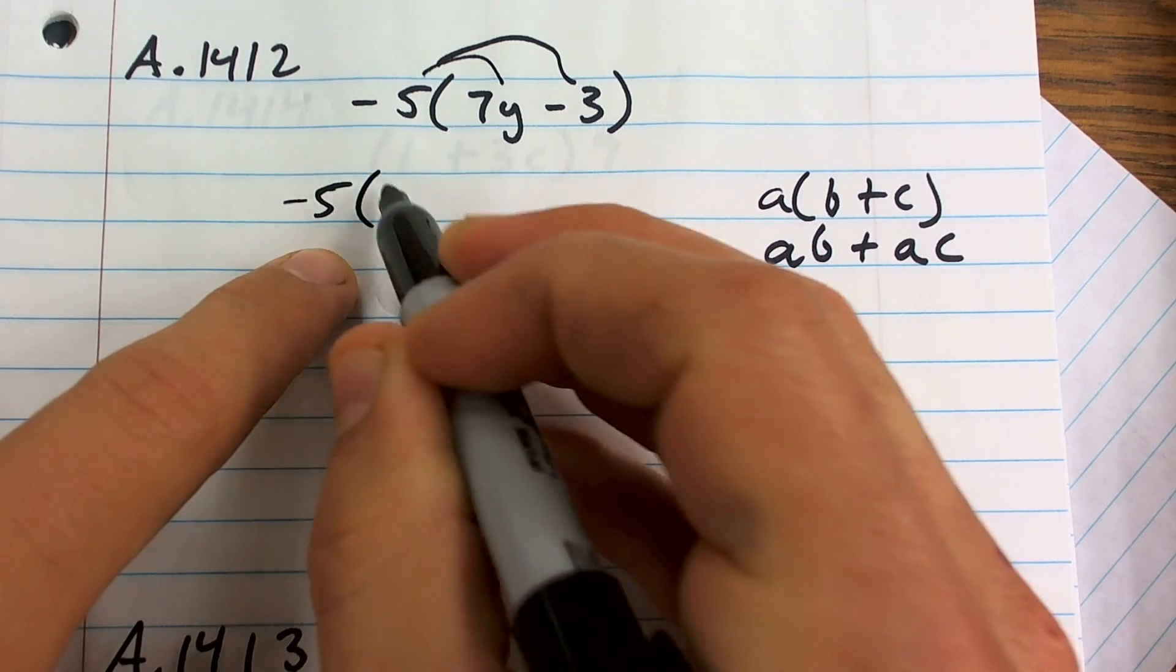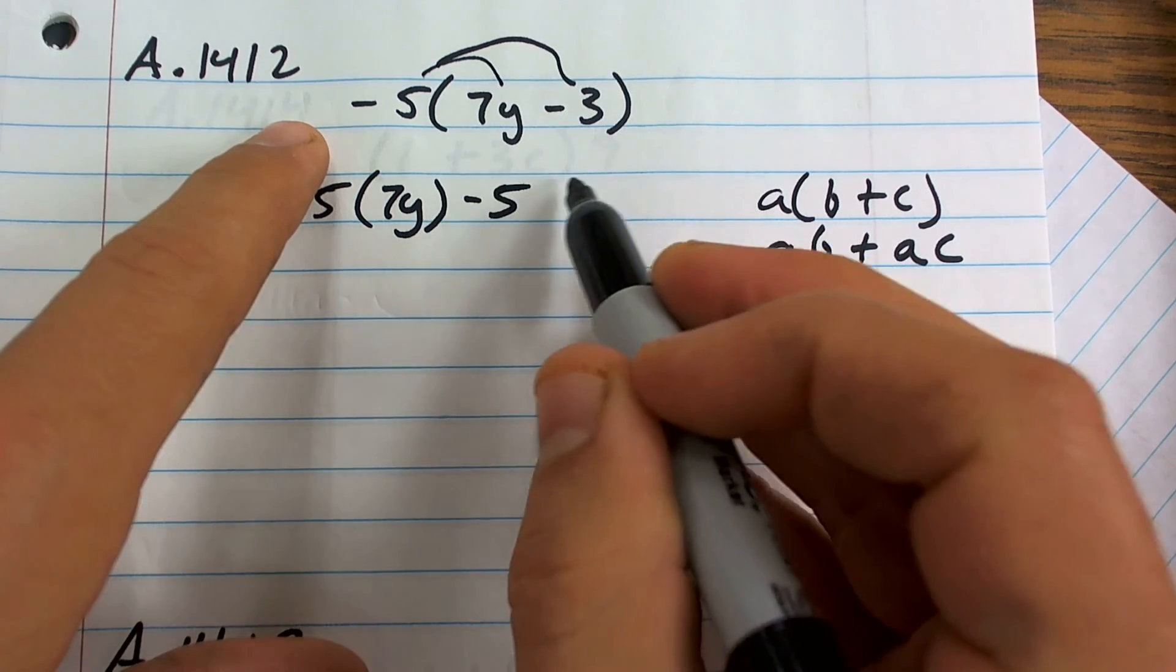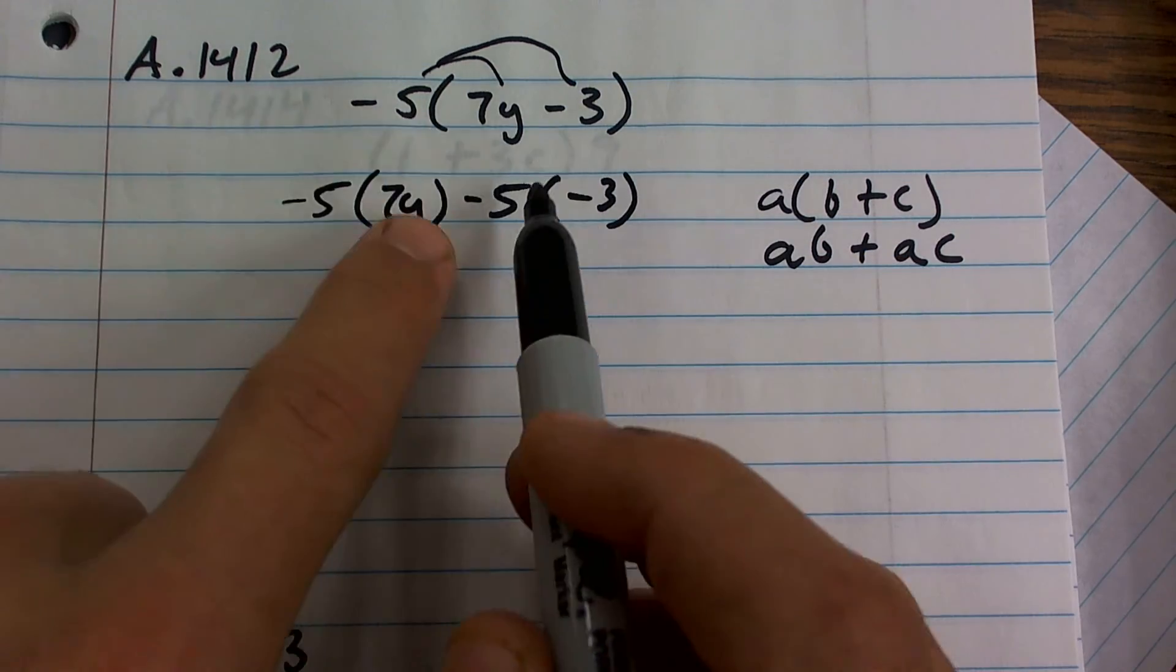So therefore I have negative 5 times 7y and then it's still going to be a negative 5 times a negative 3. Notice how that negative sign stays with the 5.